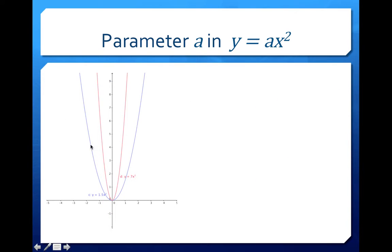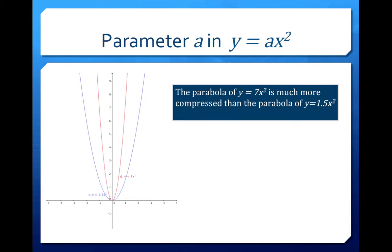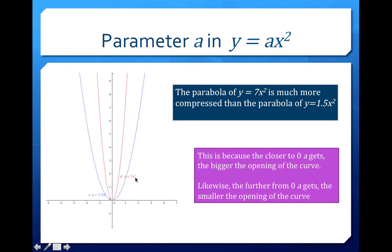Here I superimpose them for you. So here is the blue is 1.5, a is 1.5, and the red is where a is 7. So the parabola in y equals 7x squared, so the red, is a lot more compressed than the parabola of y equals 1.5x squared. This is because the closer to 0 that a gets, the bigger the opening of the curve.